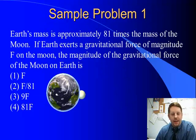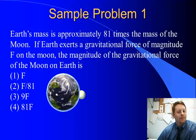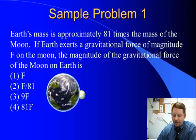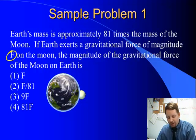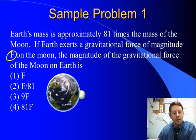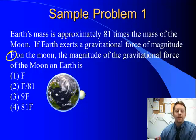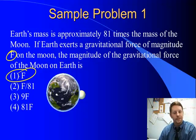Let's take a couple of sample problems. The Earth's mass is about 81 times the mass of the Moon. So if the Earth exerts a gravitational force of magnitude F on the Moon, the magnitude of the gravitational force of the Moon on the Earth is — well, this is a straightforward Newton's third law problem. If the Earth exerts a force F on the Moon, the Moon must exert a force of F back on the Earth, just in the opposite direction.